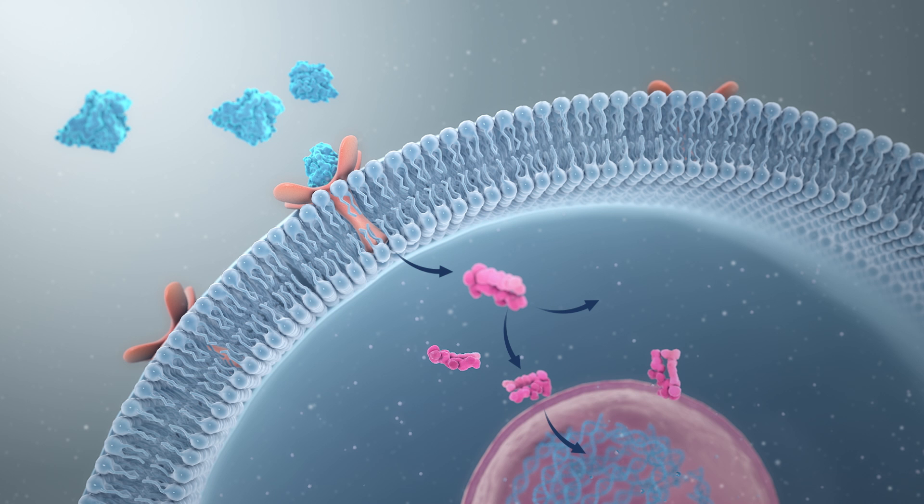So that covers some of the ways that the signal carried by the ligand can then propagate inside a cell. But what does this signal achieve exactly?